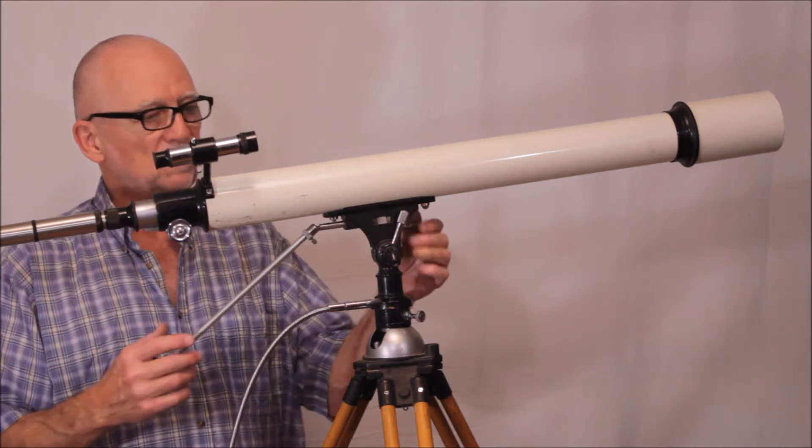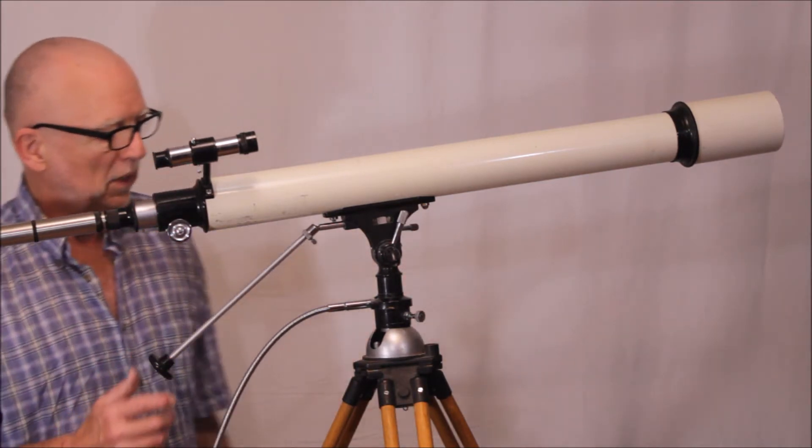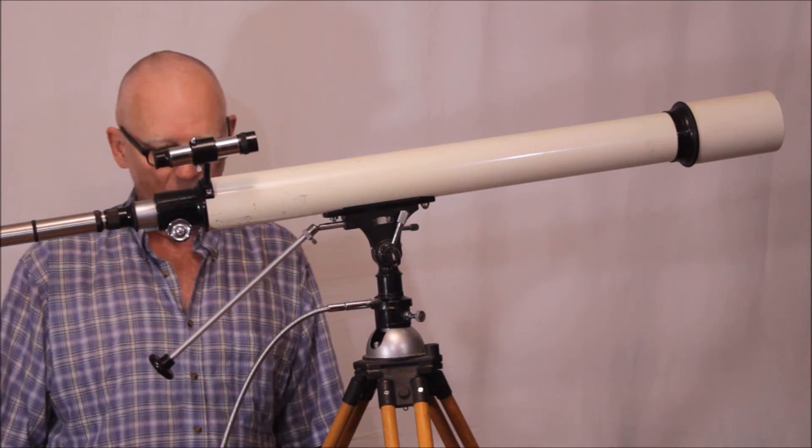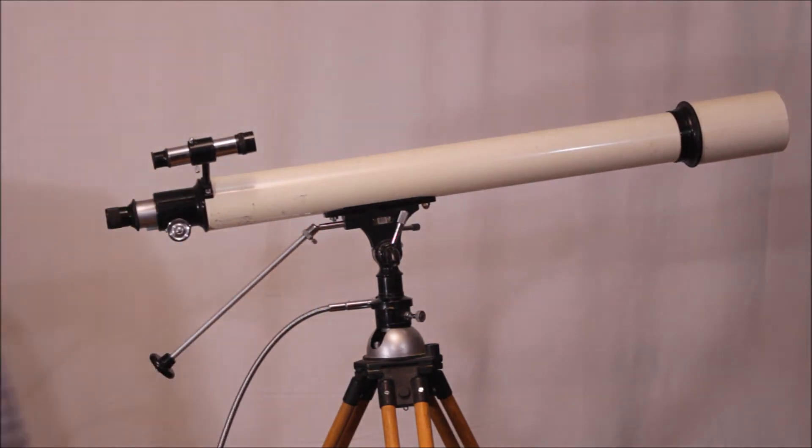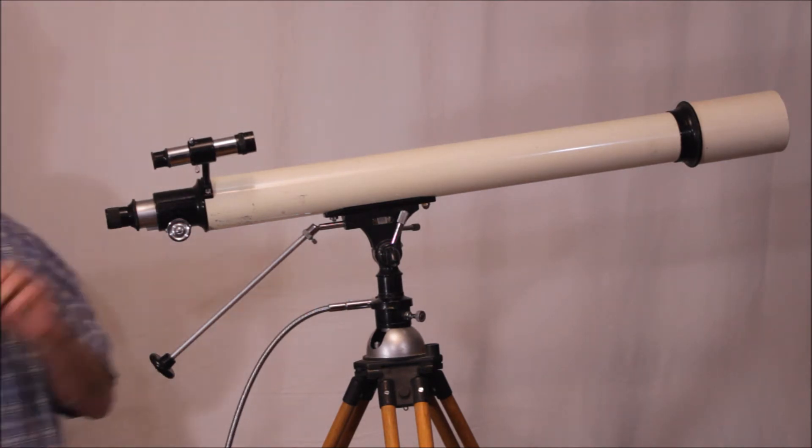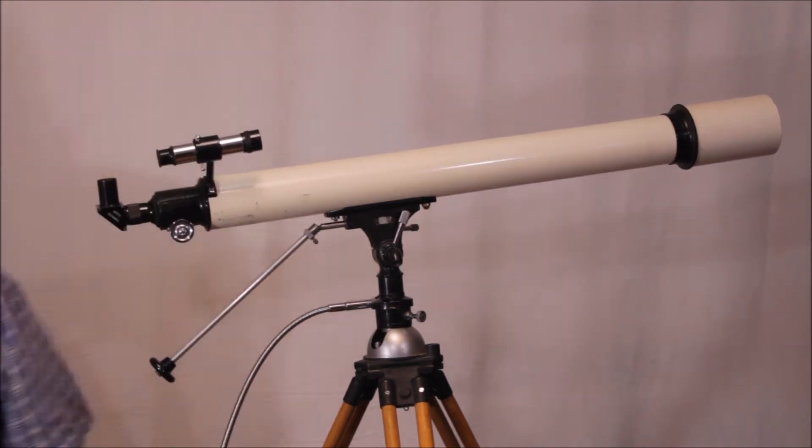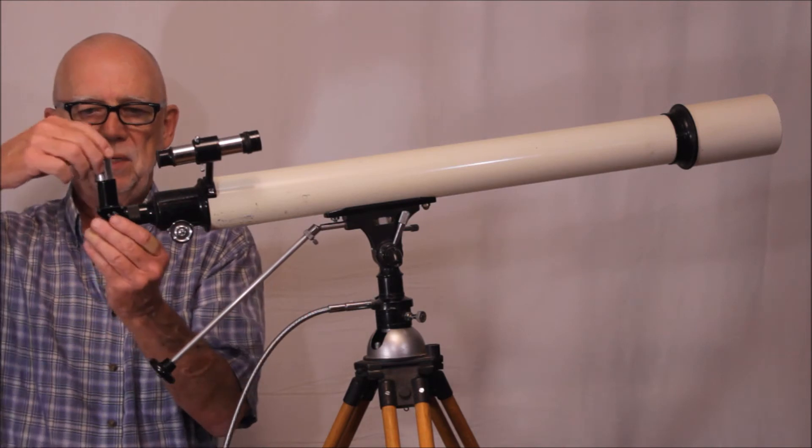Alright now let's configure it for equatorial use. First I'm going to change it. Put a star diagonal in here. I think I'll use a 25mm eyepiece here.